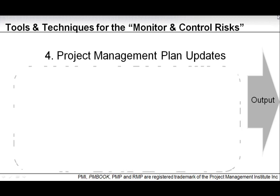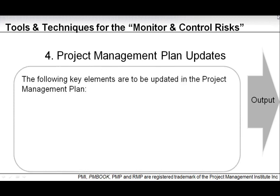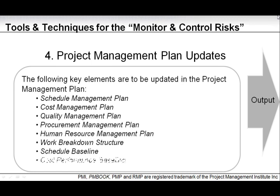Project management plan update. The following key elements are to be updated in the project management plan: schedule management plan, cost management plan, quality management plan, procurement management plan, human resource management plan, work breakdown structure, schedule baseline, and cost performance baseline. These are all updates coming out of the risk management process as you monitor and control, and should be reflected in the integrated project management plan as well as the risk management plan. This is another exam-relevant area marked with the yellow indicator.